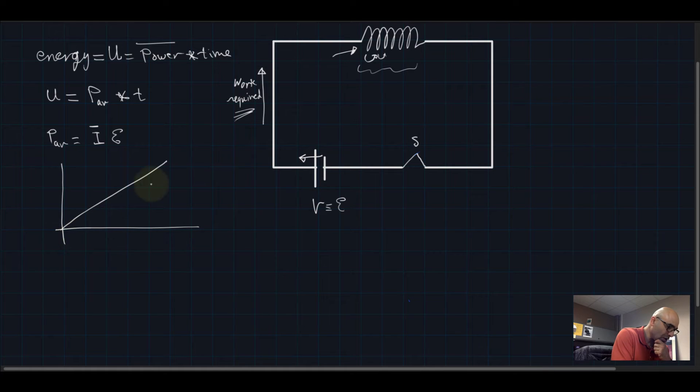If I want to find the average value, it would be I average, which is gonna be half the value of I, because if you add zero plus I—this is here the x-axis is time—and you divide it by 2 to get the average, so this is the average. So P average now is equal to one-half I times the back electromotive force.